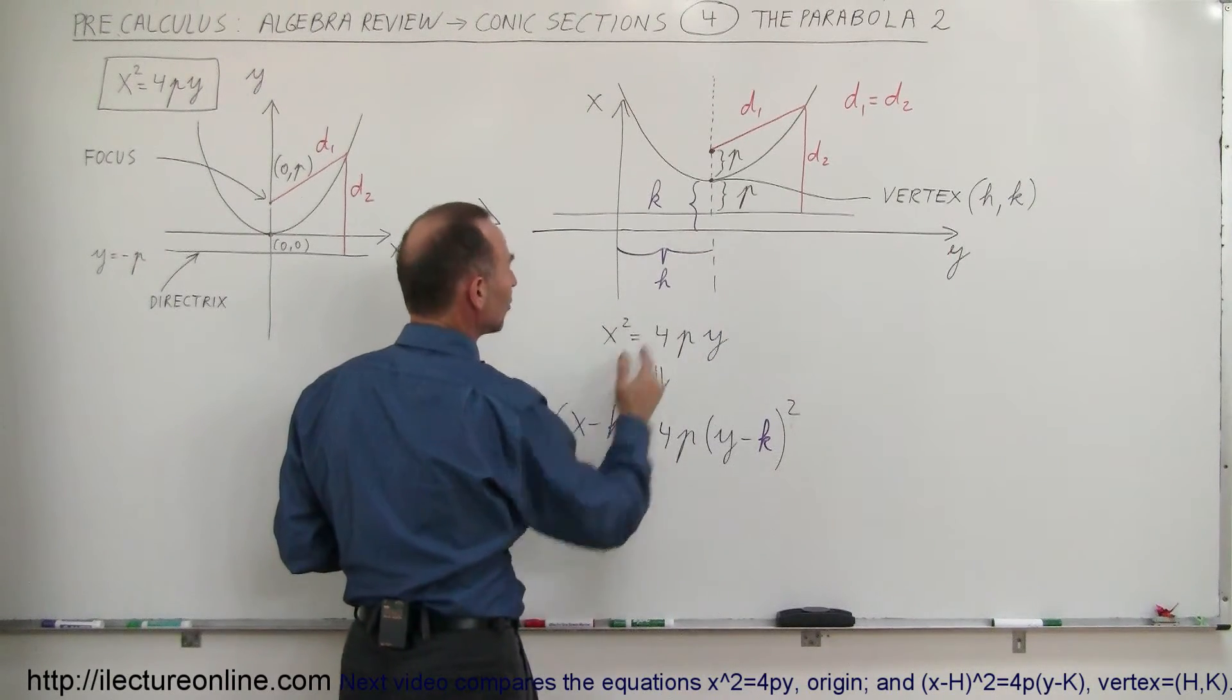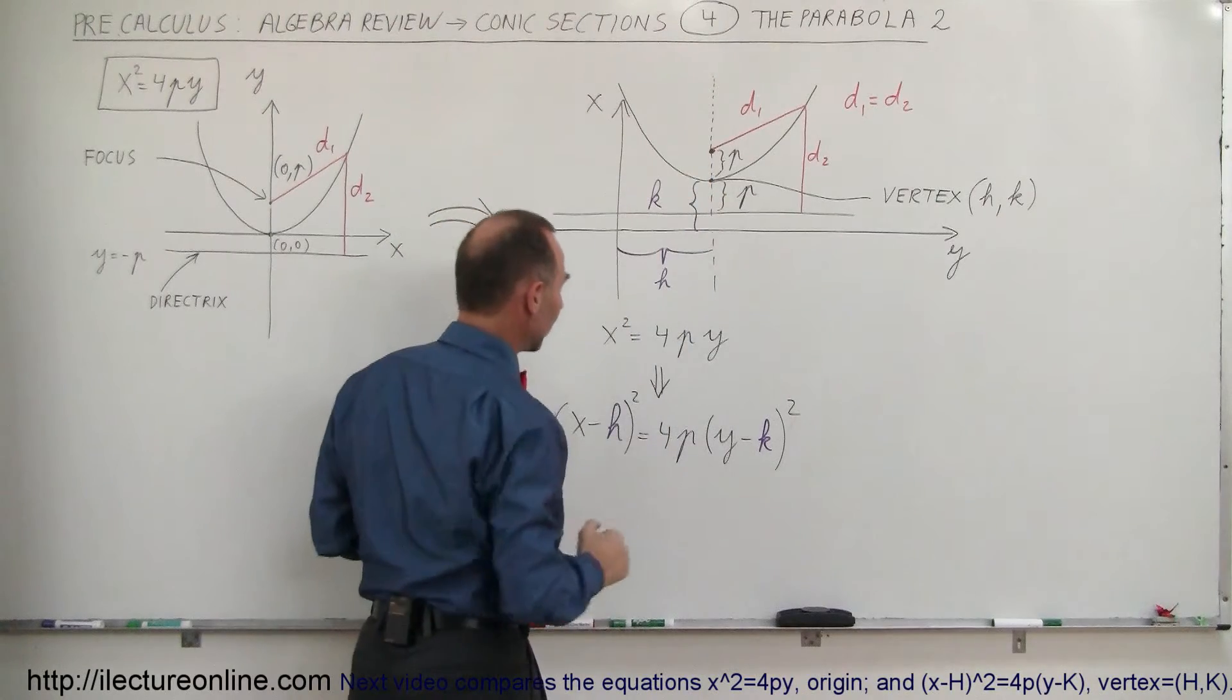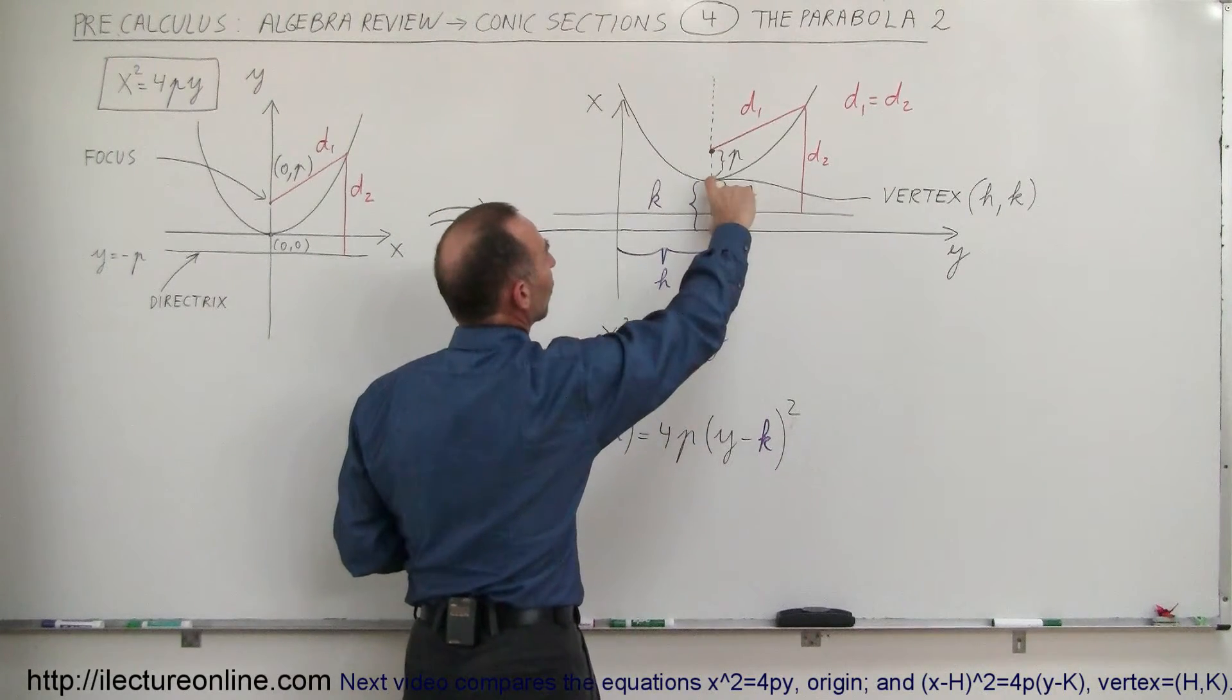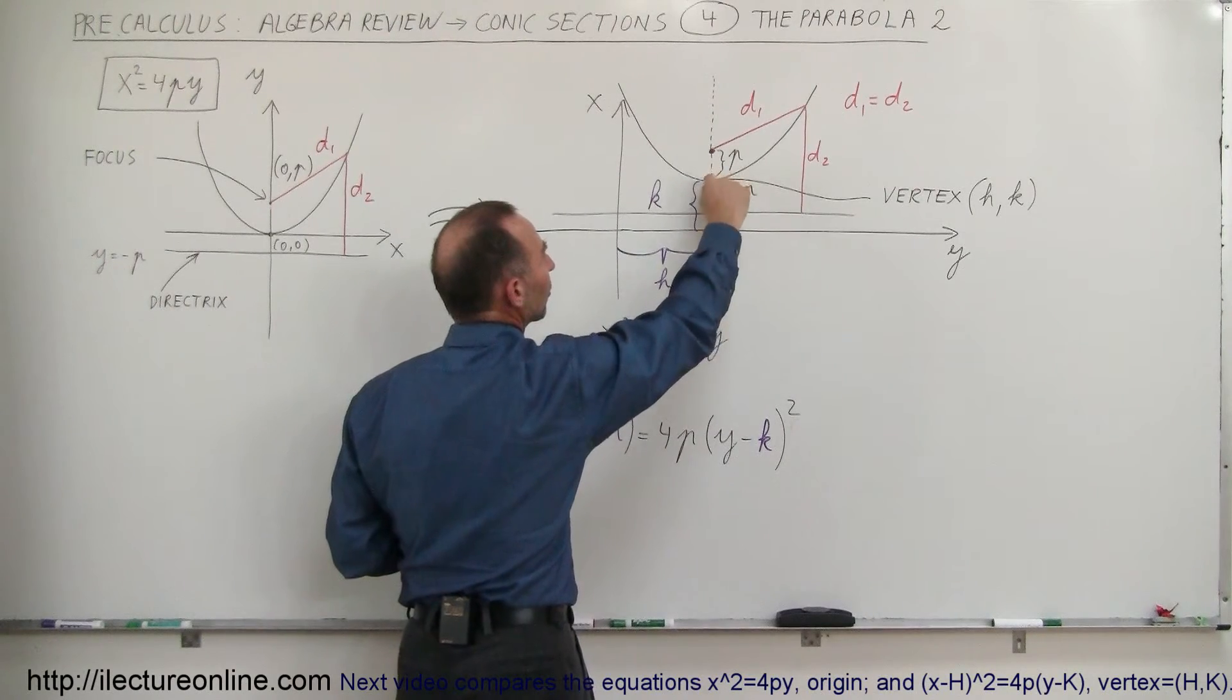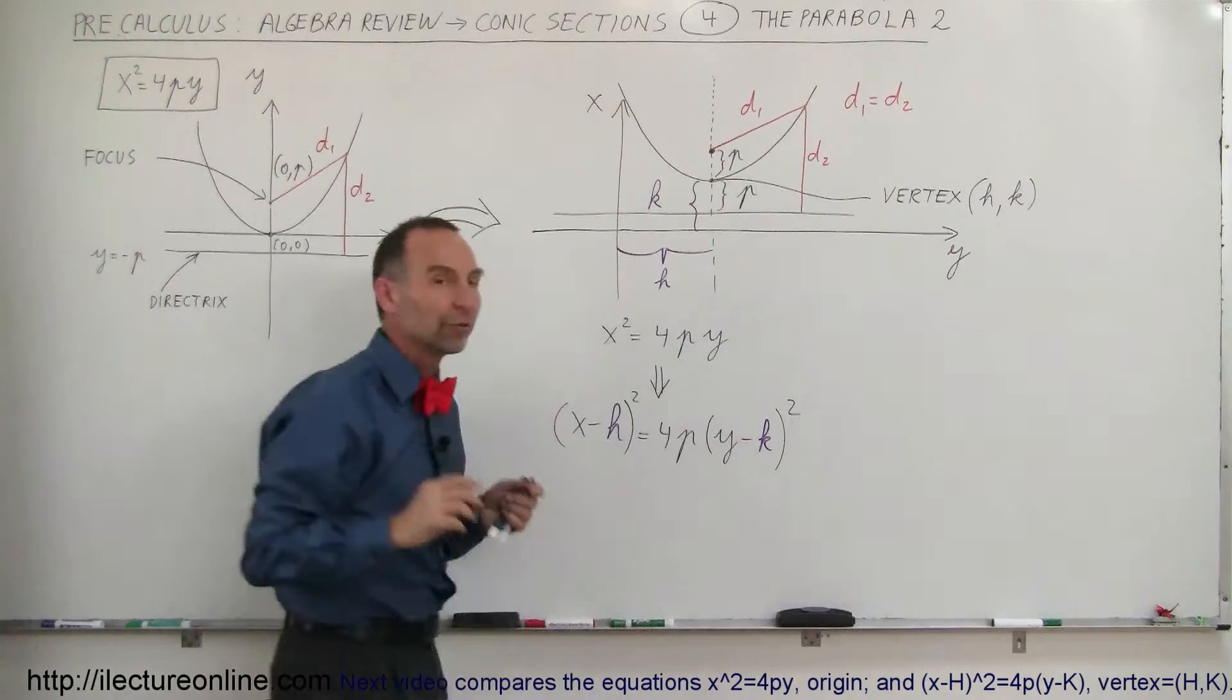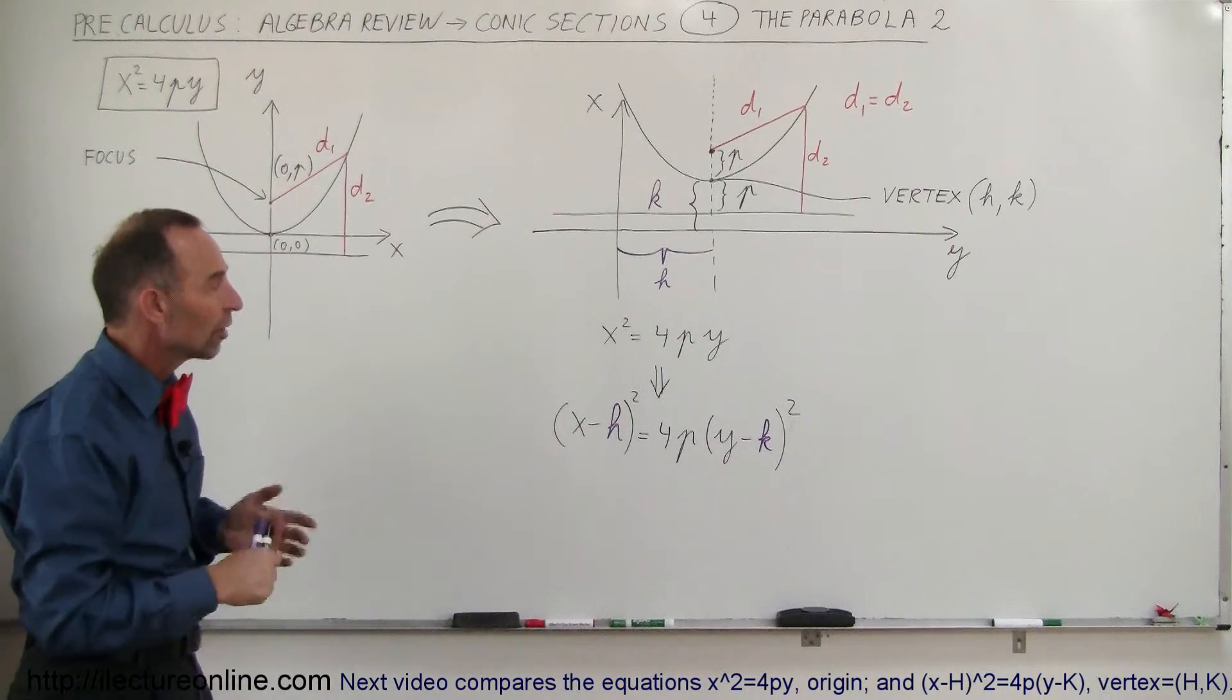If x is equal to h, h minus h is 0, that would put us right at the vertex, just like before. And if y is equal to k, y minus k is 0. So again, that would be the same thing as if the parabola had the vertex at the origin, so the equation does seem to work.